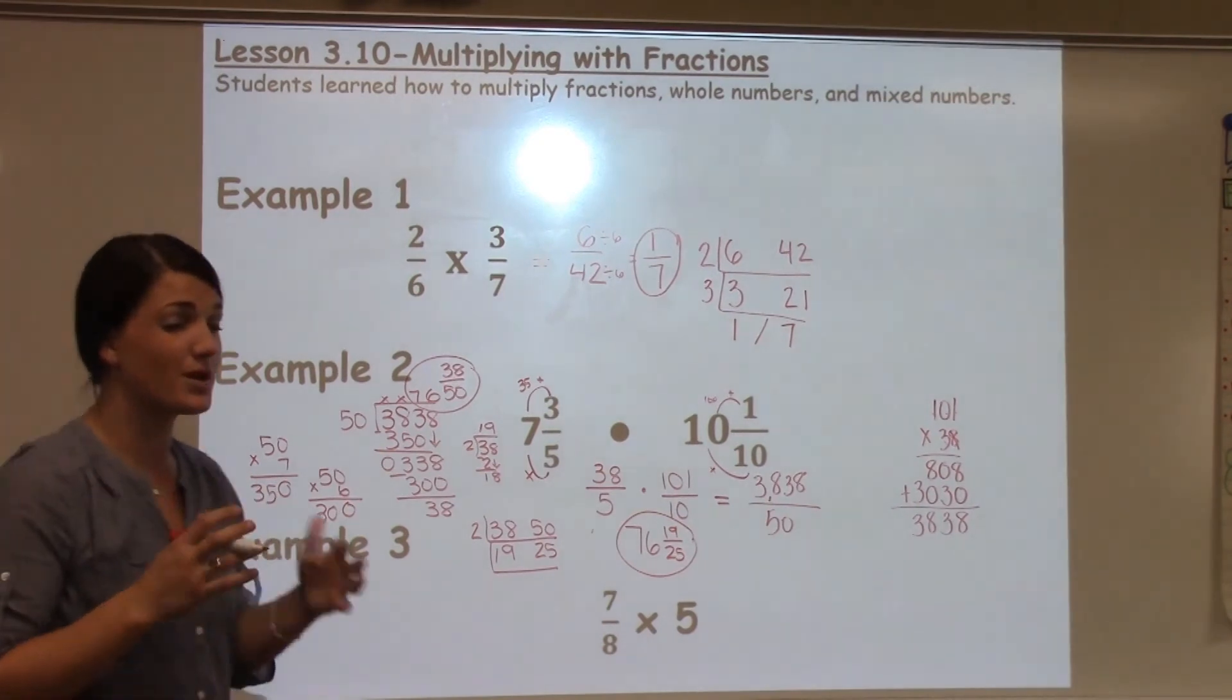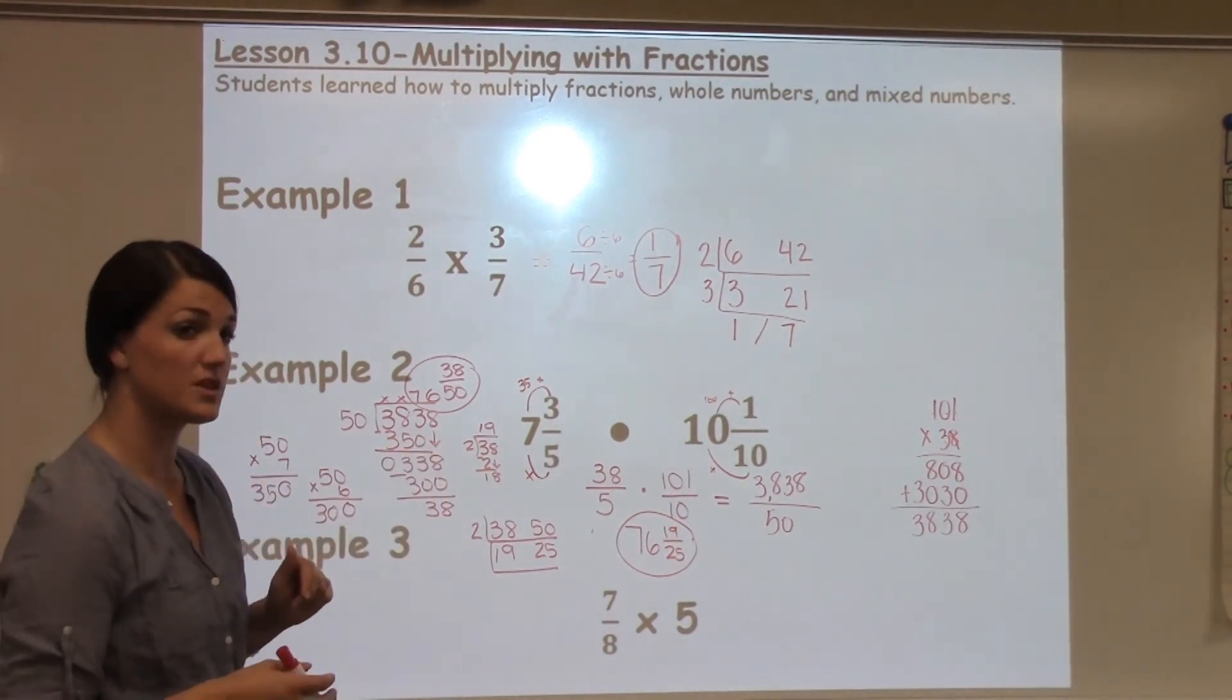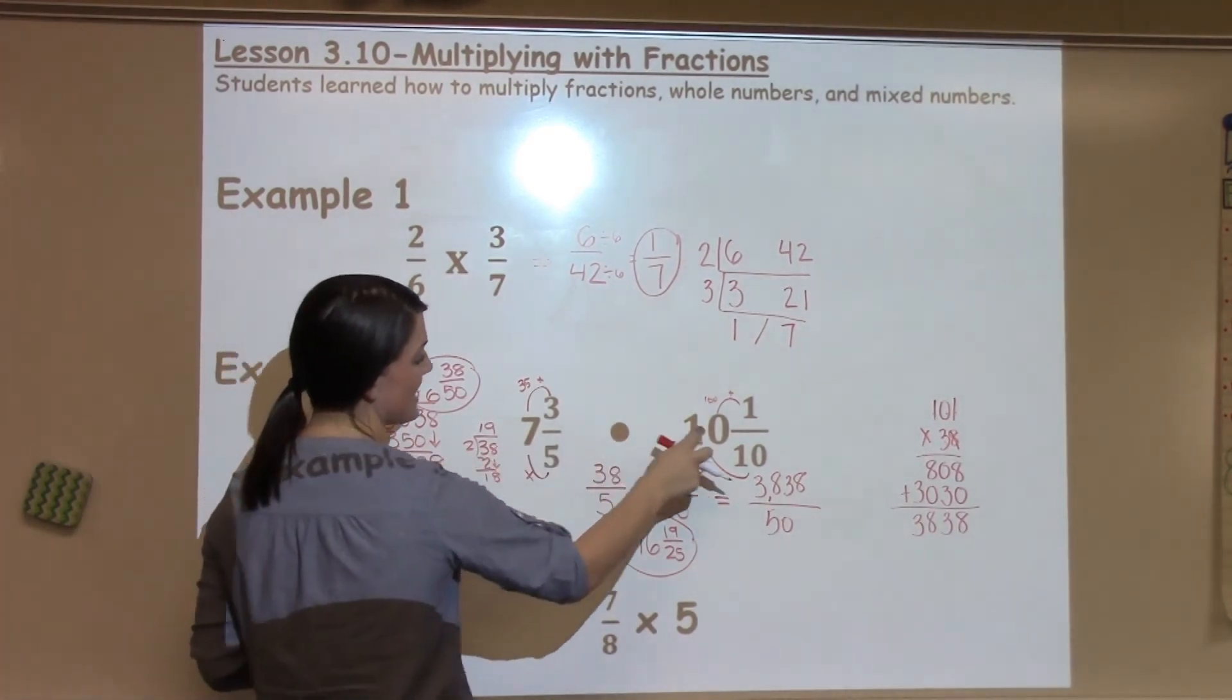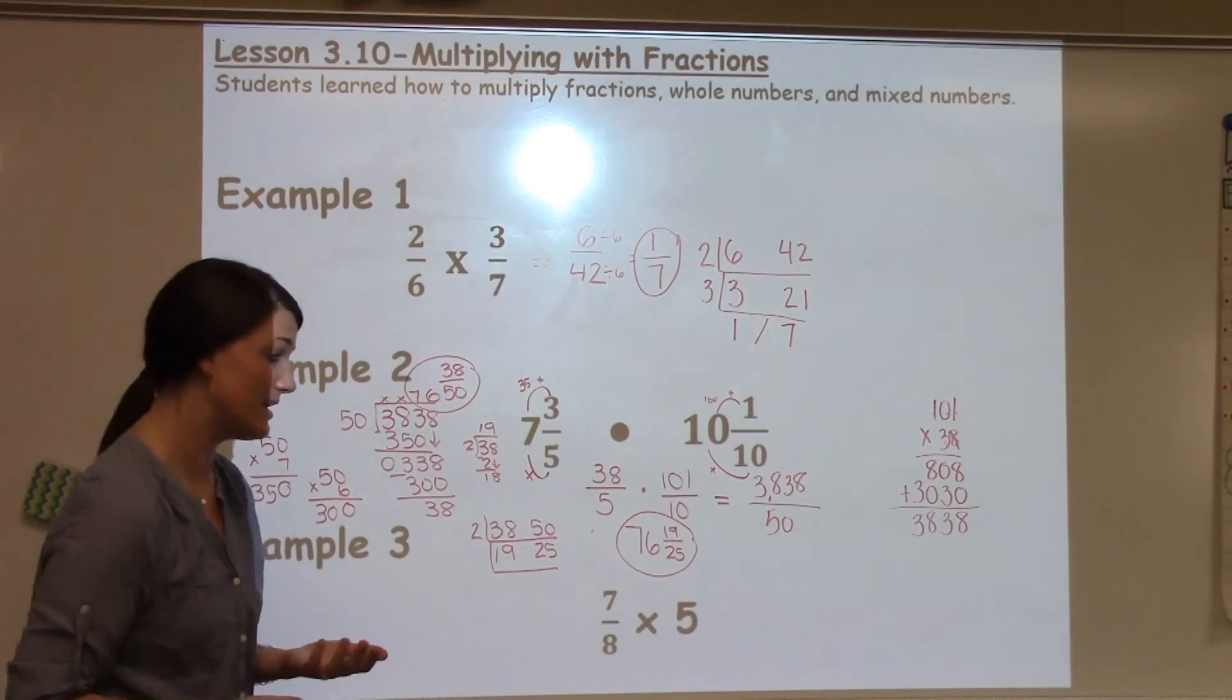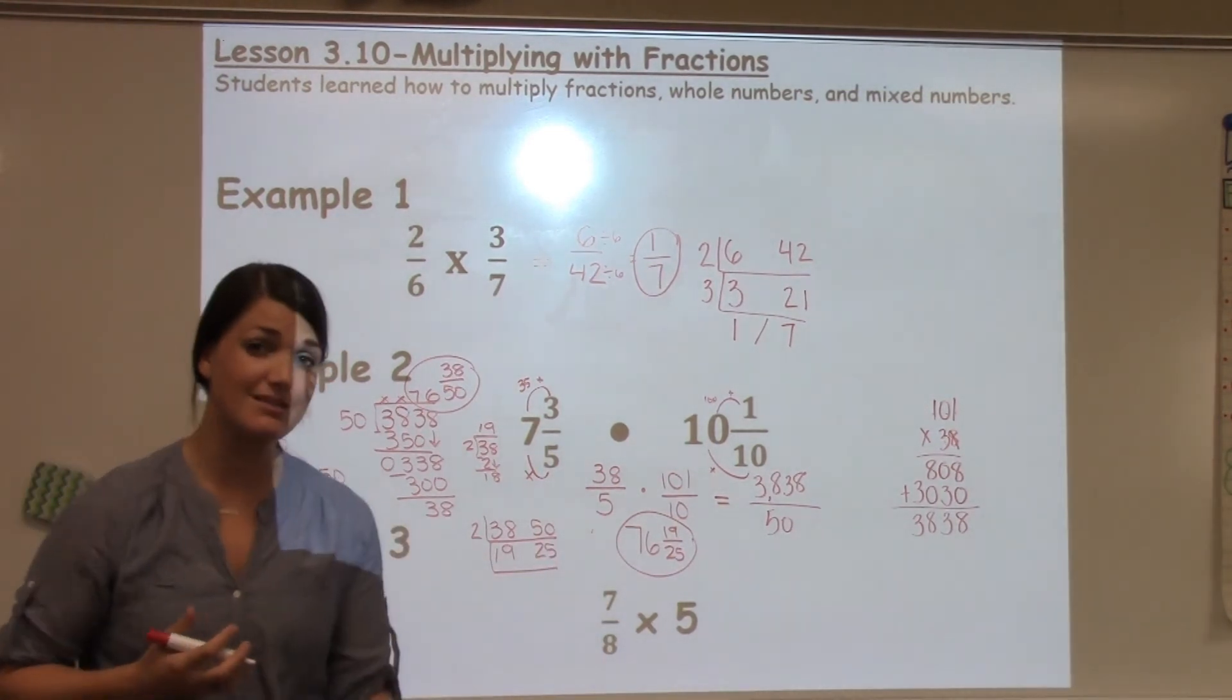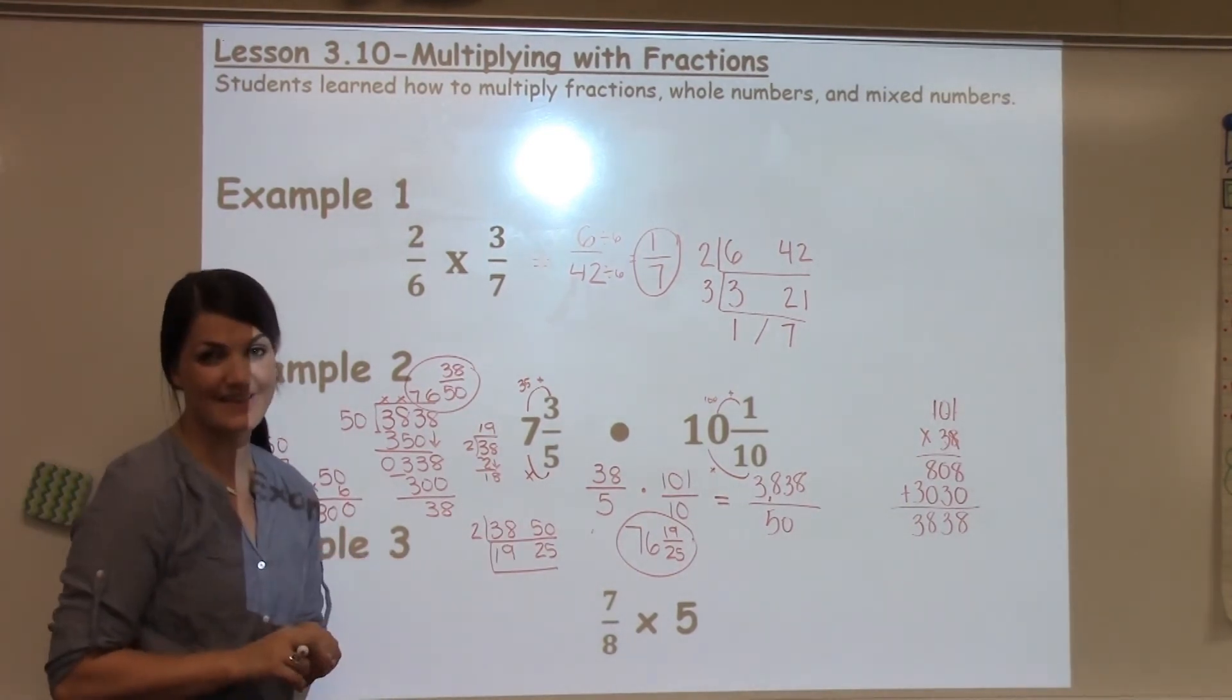Now to prove to students that we would not have gotten the same answer if we would have just multiplied everything, I always have them look at the first whole numbers. 7 times 10 would have gotten 70, and my answer here is 76. So that's why, even though it's a lot of steps, we have to follow those steps or we will not get the right answer.